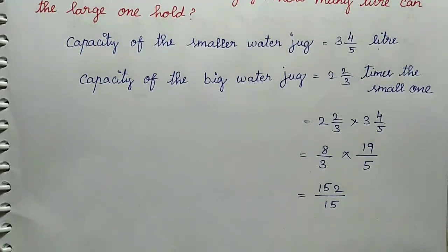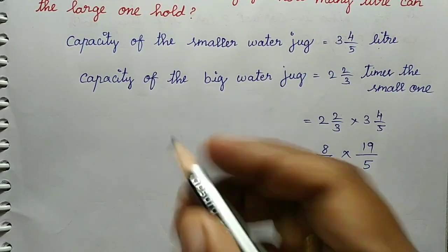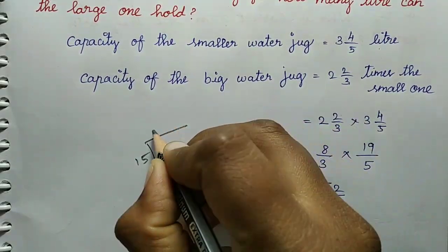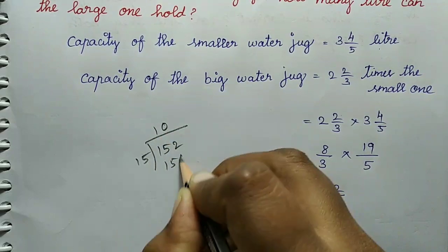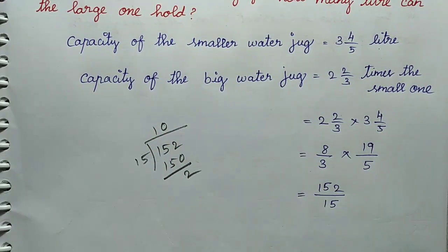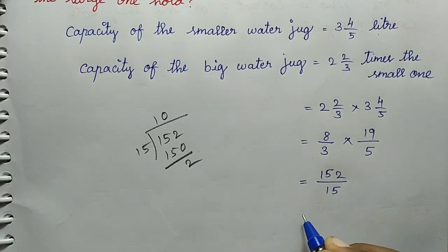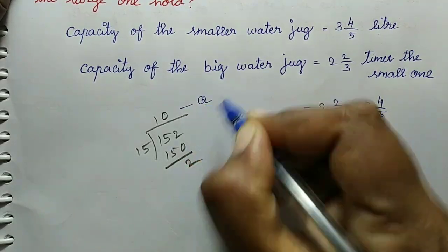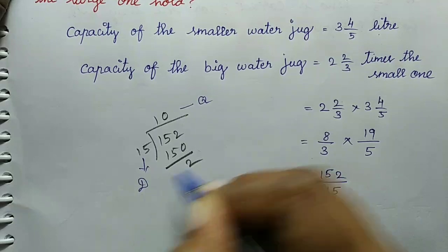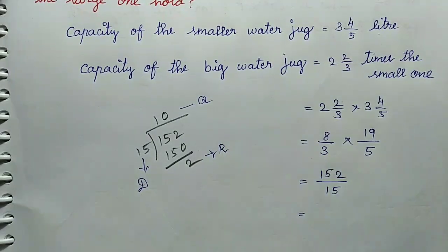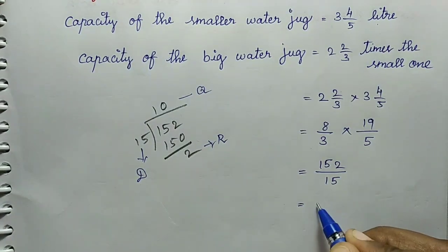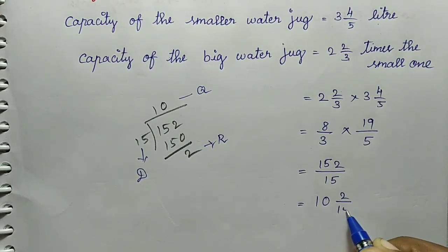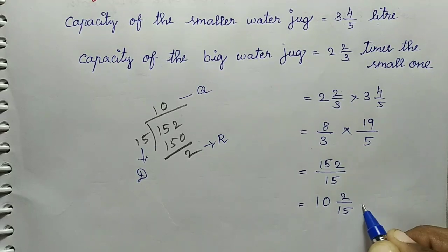In the 2 values, divide. 152 divided by 15: 10 times 15 is 150, remaining 2. Mixed fraction are divided. Question 152, divisor 15, quotient 10, remainder 2.